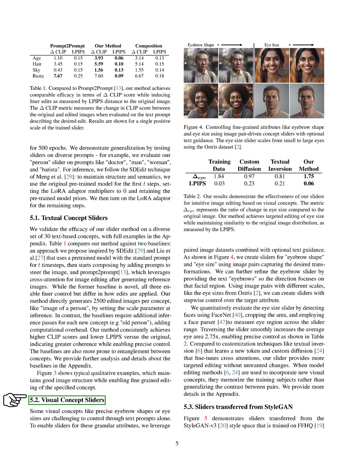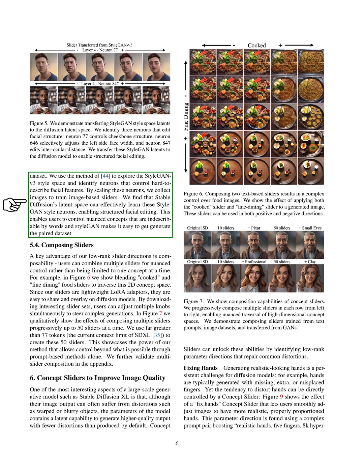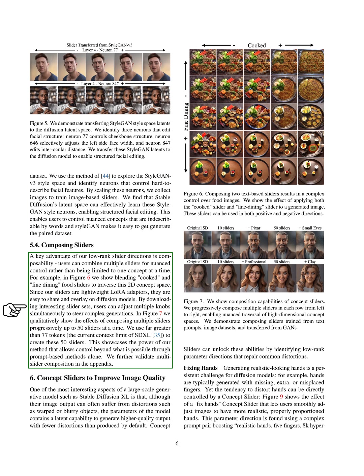We also tested our method on visual concepts like eyebrow shapes or eye sizes, which are difficult to control with text prompts alone. To do this, we used paired image datasets combined with optional text guidance, creating sliders for eyebrow shape and eye size using image pairs that captured the desired transformations. We also transferred sliders from the StyleGAN V3 style space trained on the FFHQ dataset, allowing us to control nuanced concepts that are difficult to describe with words. One key advantage is that users can combine multiple sliders for nuanced control, such as combining 'cooked' and 'fine-dining' food sliders to traverse a 2D concept space.